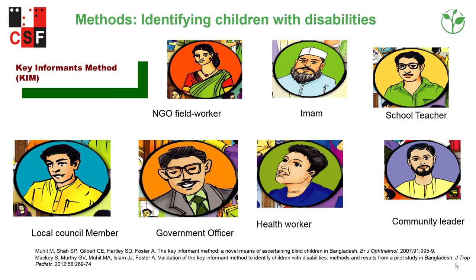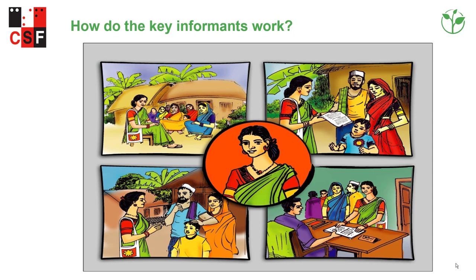Image of the key informant method — these are people who identify children with disabilities from their community. Key informants are unpaid volunteers from different backgrounds, e.g. NGO worker, imam, school teacher, local council member, government officer, health worker, and community leader. A flip chart shows how the key informants work.